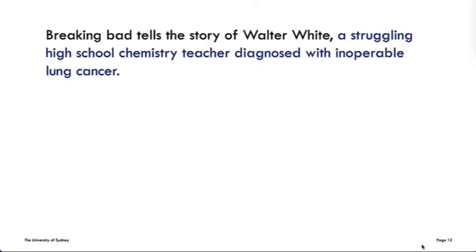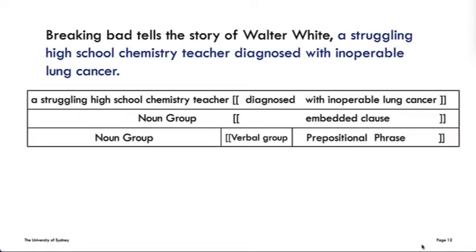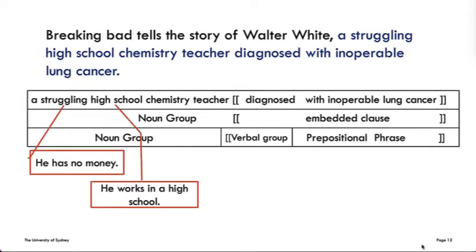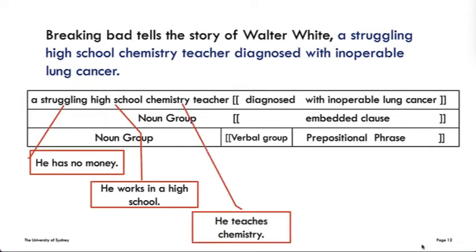Let's focus on the second part of the sentence: 'a struggling high school chemistry teacher diagnosed with inoperable lung cancer.' This is a long noun group. Long noun groups are common to academic writing because they can encapsulate lots of information, like: he has no money, he works in a high school, and he teaches chemistry.